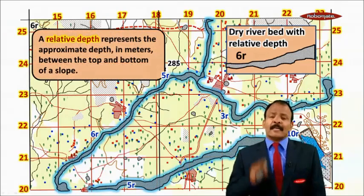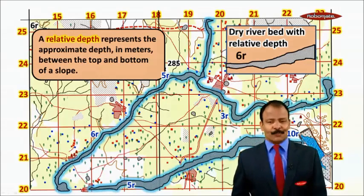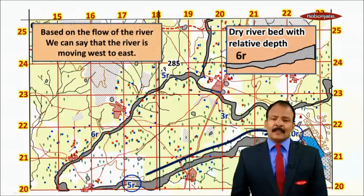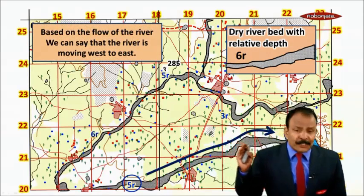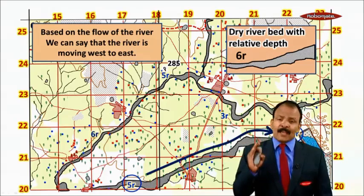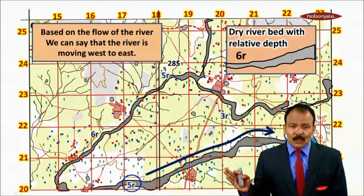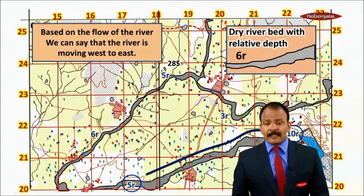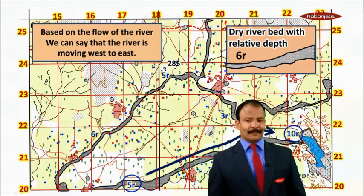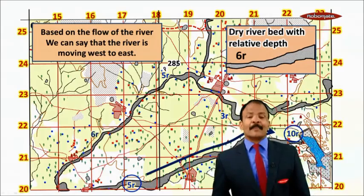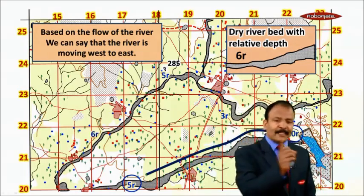There are letters written like '6R' on the map. This refers to relative depth, which represents the approximate depth in meters between the top and bottom of a slope. This is useful in understanding the direction in which a river or stream flows. For example, where one side shows 5R and the other shows 10R, the water flows from the shallower side toward the deeper side — in this case from west toward east.